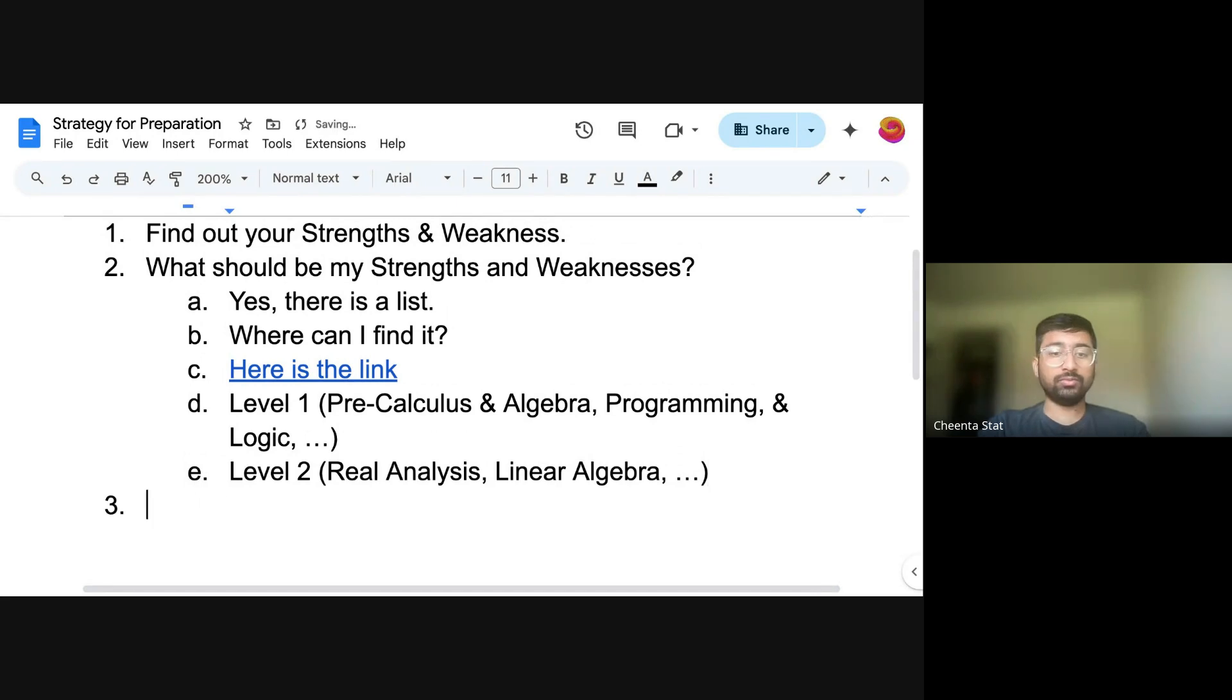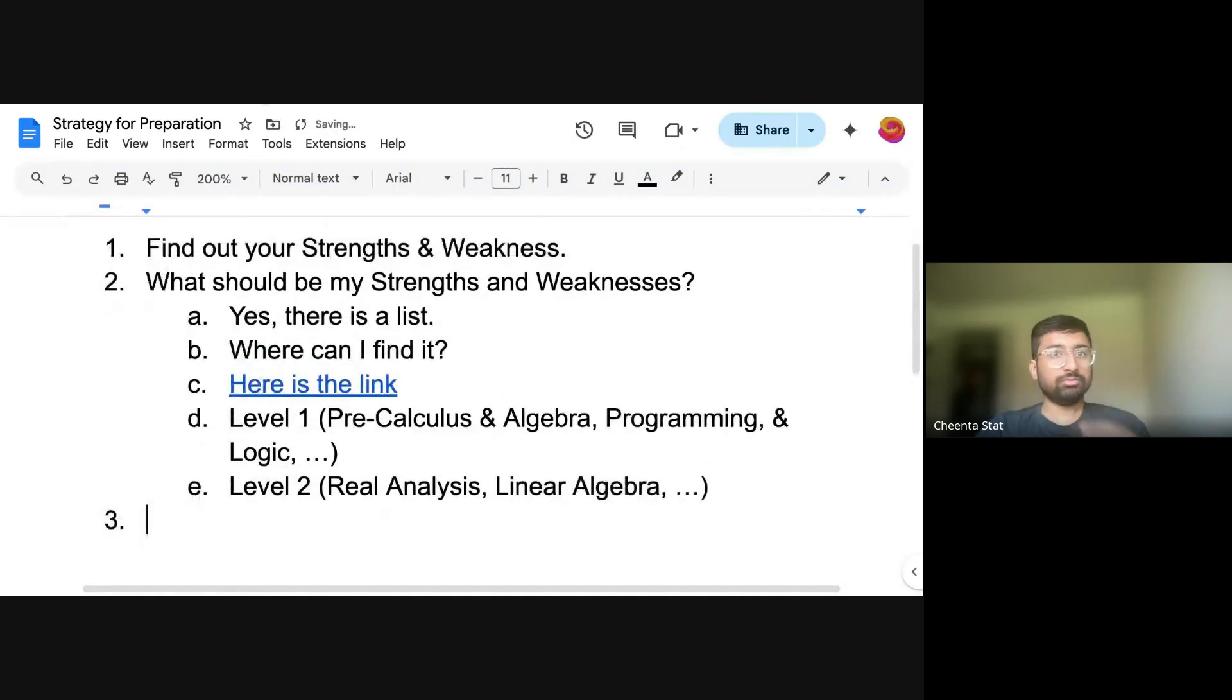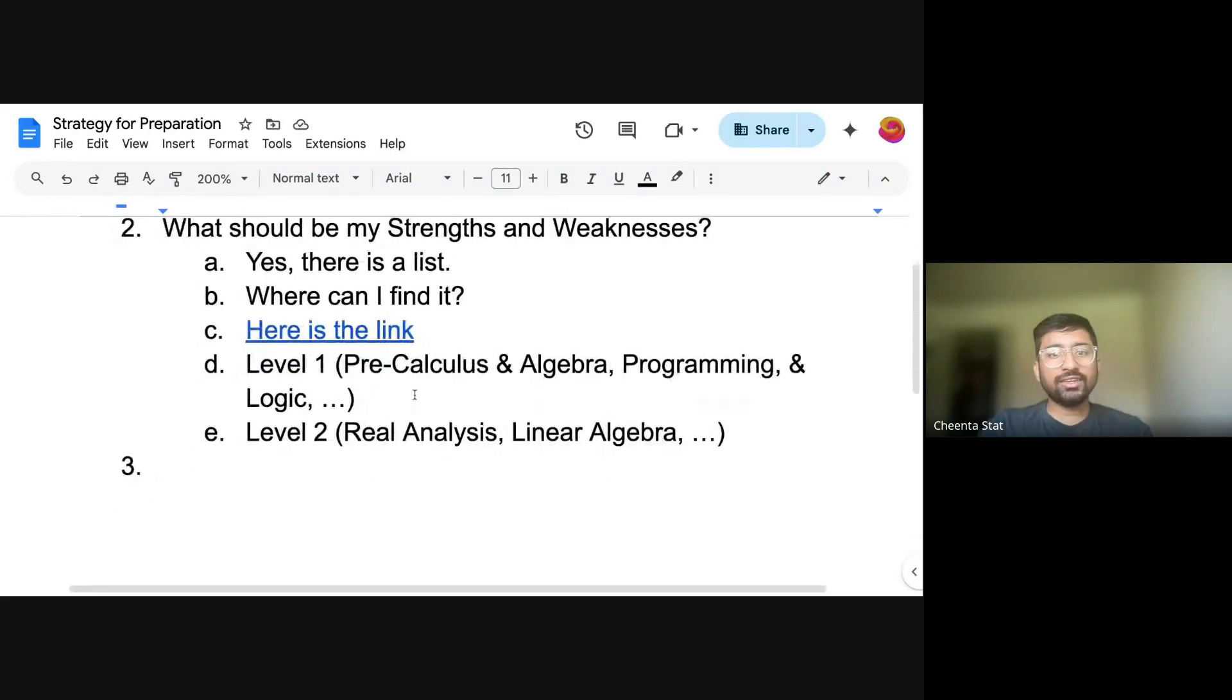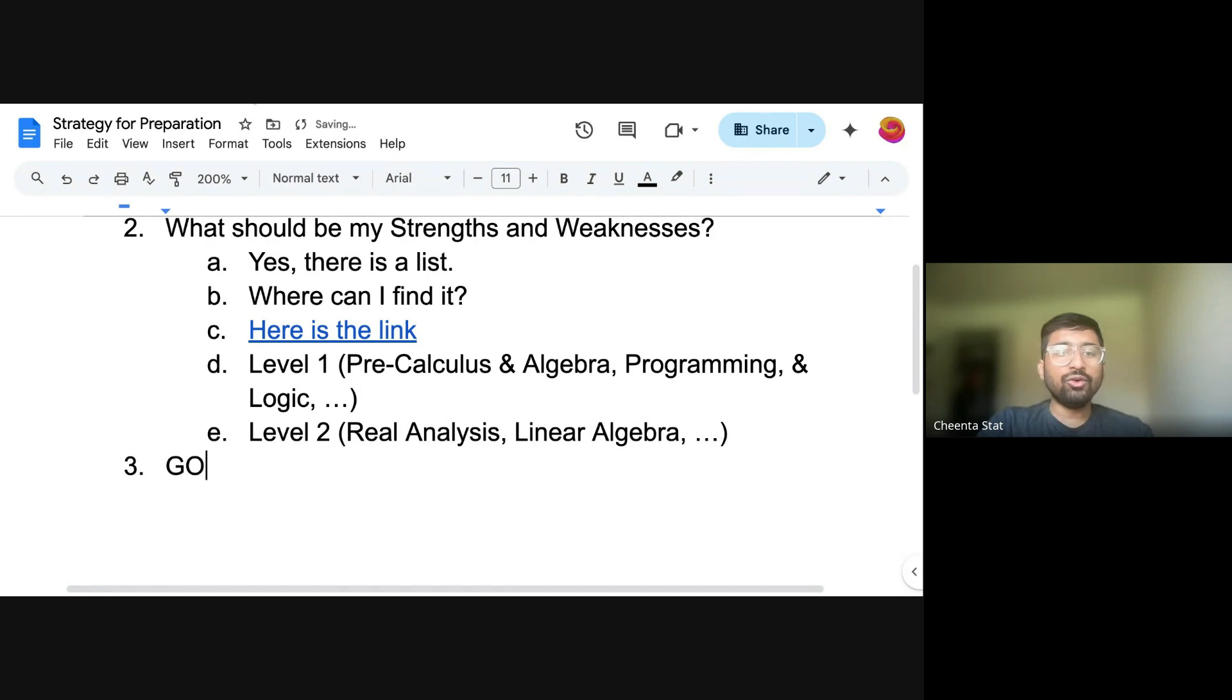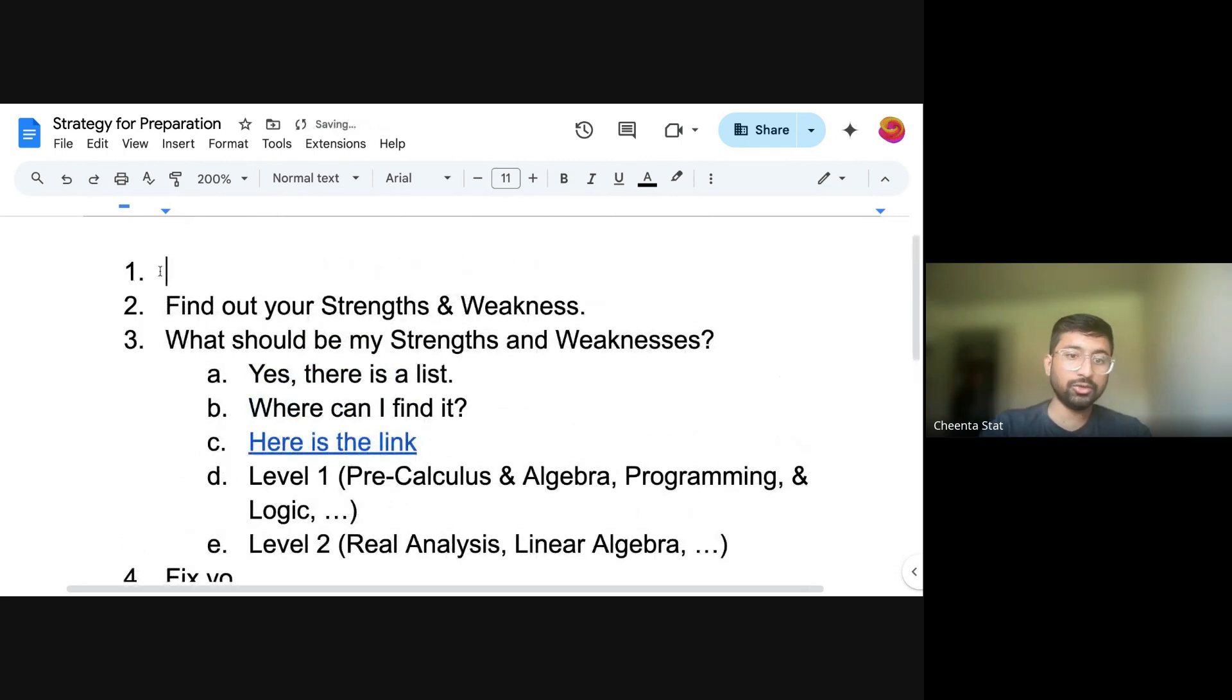Then what should you do? The process is very simple. Then, you fix your goals. In our case, it's CMI MSC DS, ISI MSTAT, and IIT GM-MS. Look at these three. So then, you fix your goals and fix a single goal, let's say, for example, CMI or CMI MSC DS.